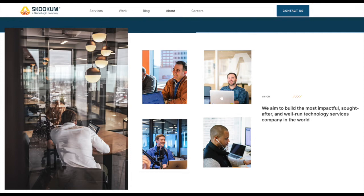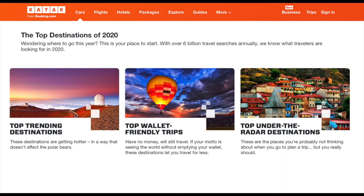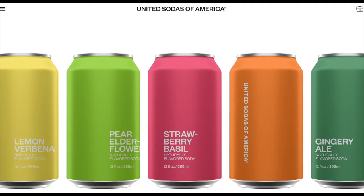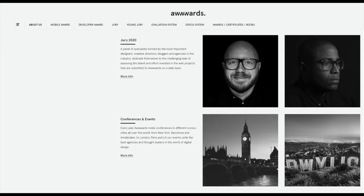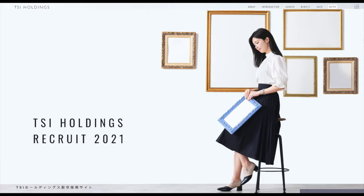With Sukum, the largest picture is on the left and the eye slowly goes to the right. Kayak is an example of center image alignment, and so is United Sodas of America — minimal and eye-catching. Awards.com, which recognizes the best websites in the world, aligns photographs on the right edge on their about page. Finally, TSI Holdings from Japan, an apparel business, has an interesting image where it's not just the young woman but also the frames hanging on the wall.